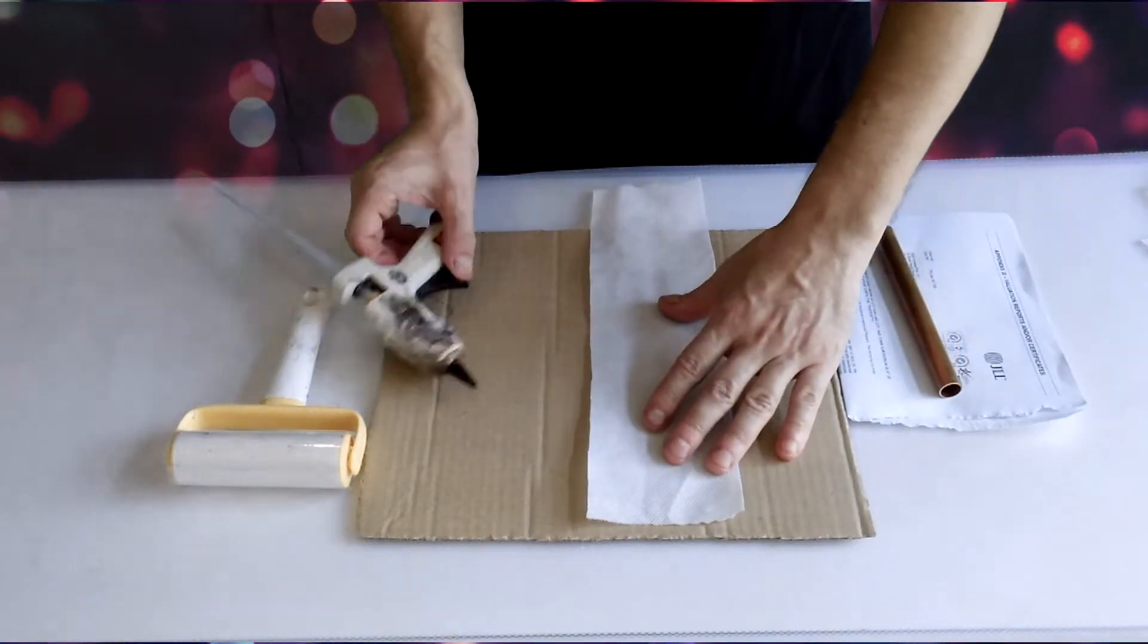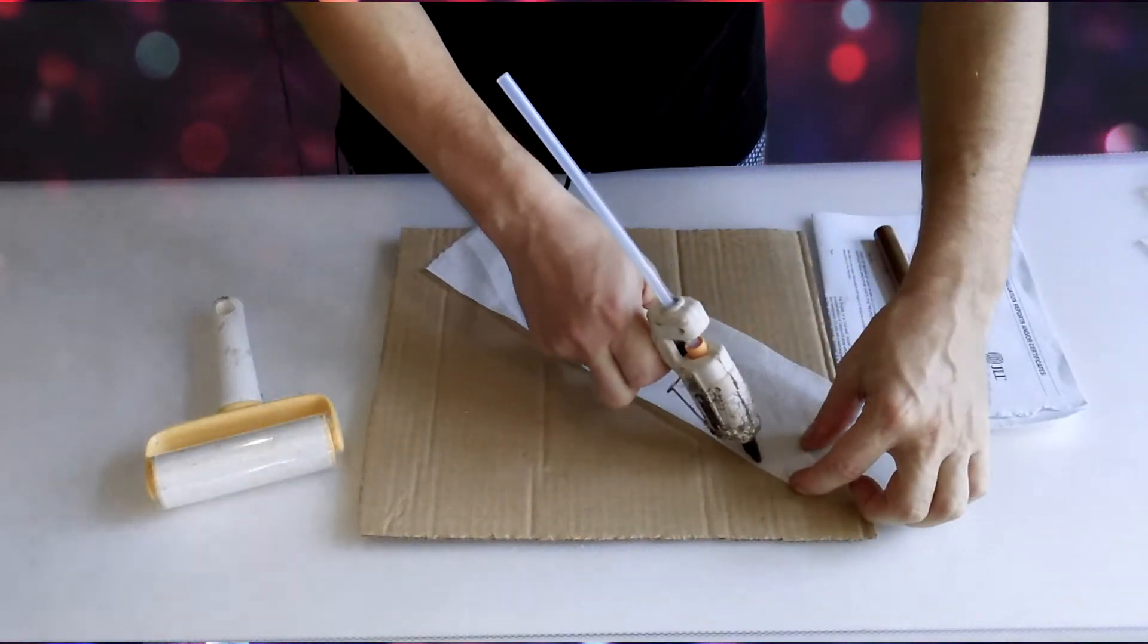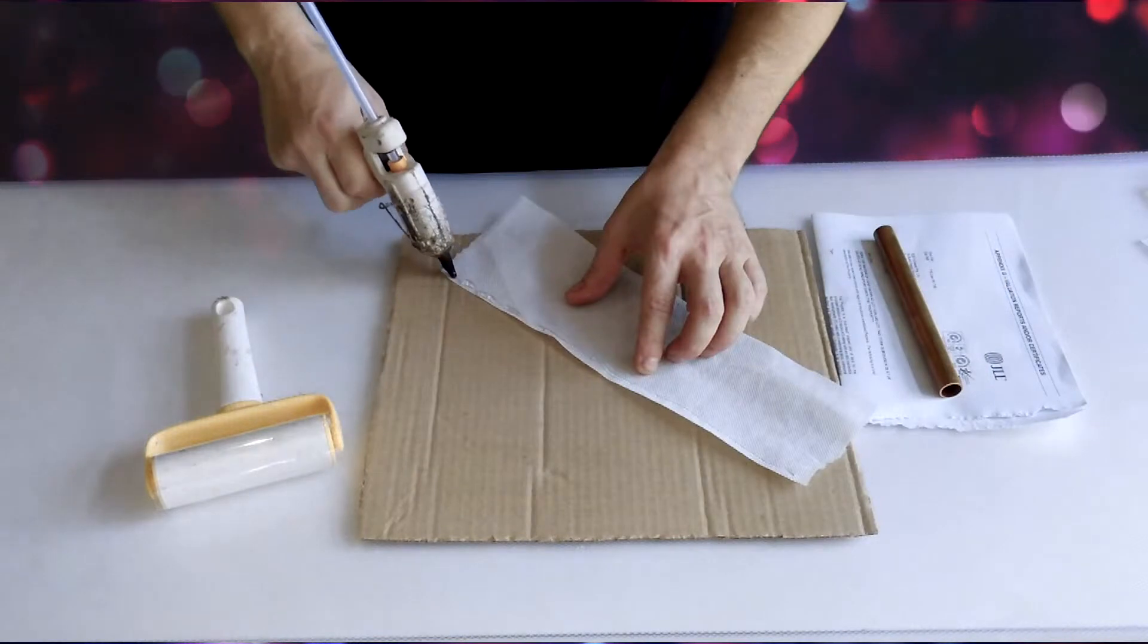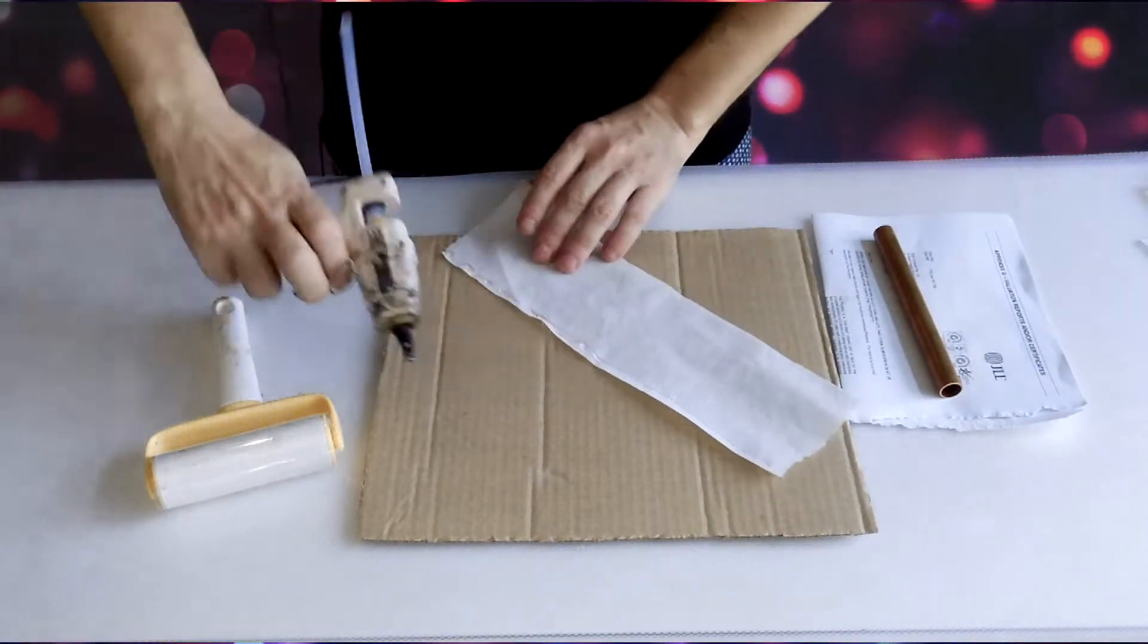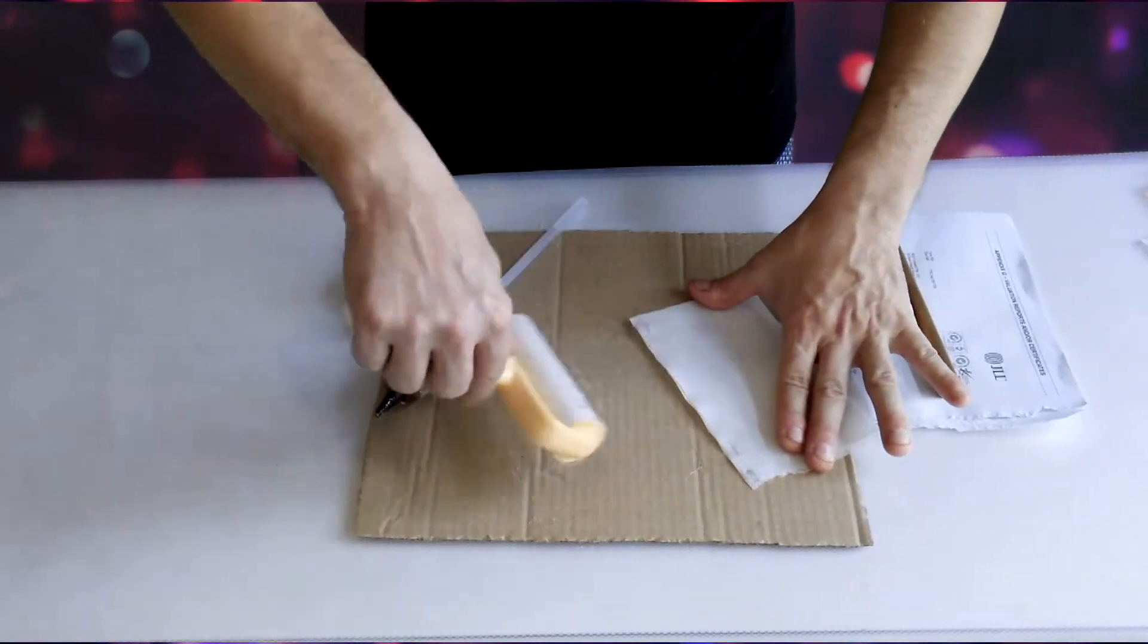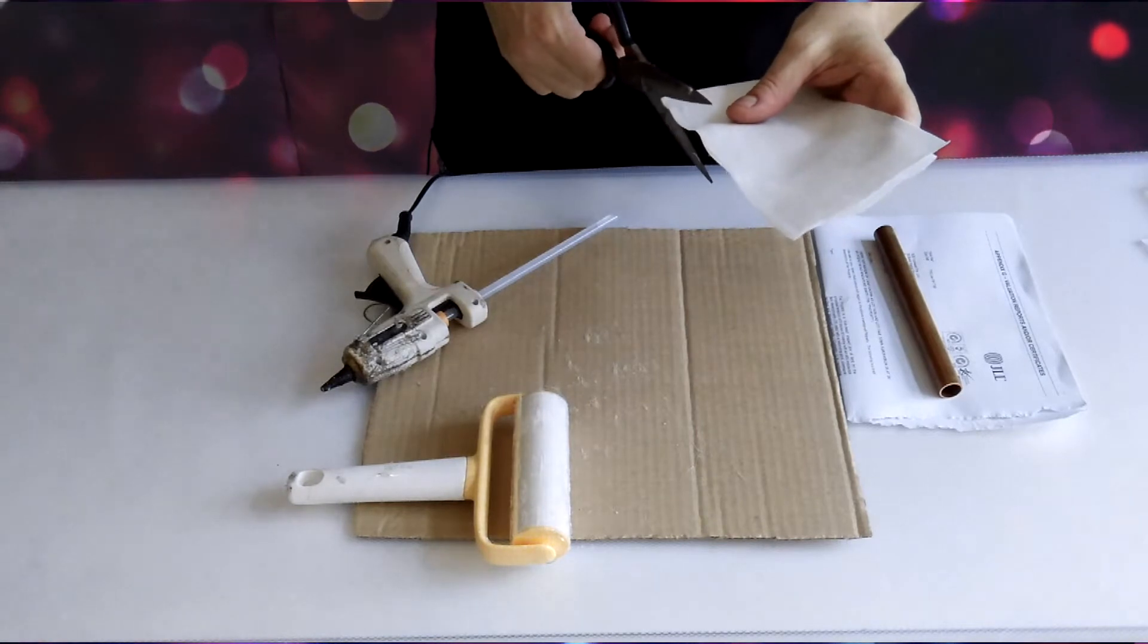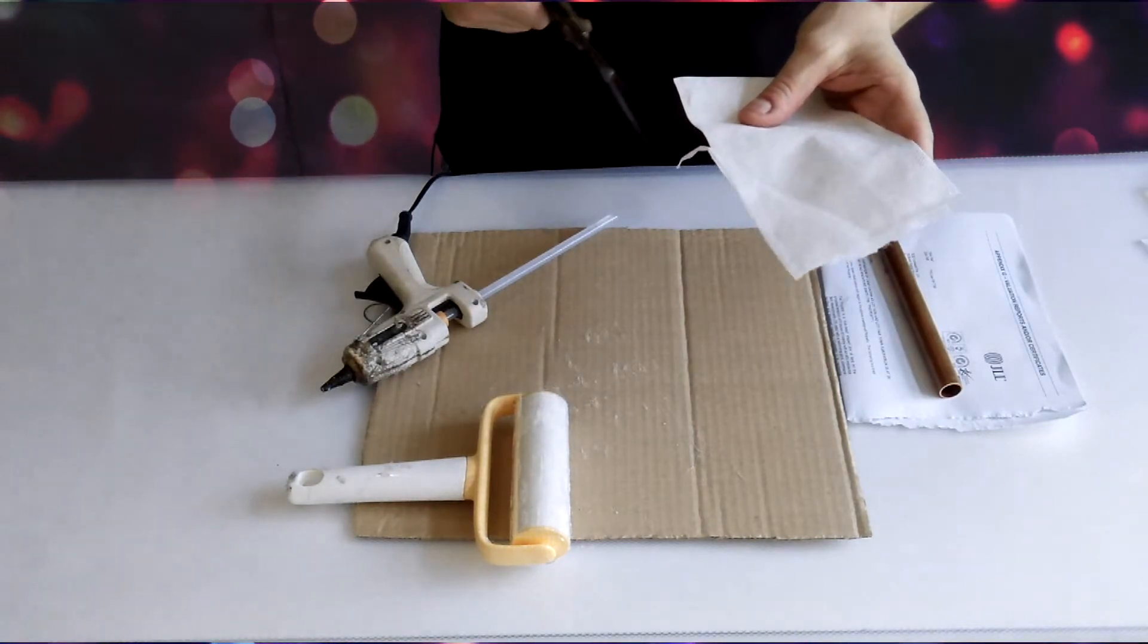So first thing I'm going to do is make a bead of glue from the top to bottom. And I use the brayer and I just smooth the glue out that way. When it's cooled down a little bit, just cut the edge.